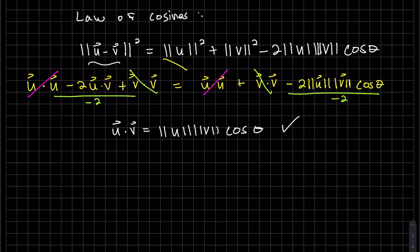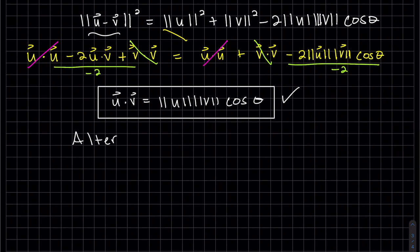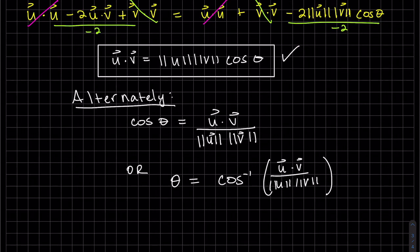And we did it. That was our alternate dot product above. And alternately, this is used for a lot. You can solve for cosine of theta. It's the ratio of the dot product divided by the magnitudes. Let's do an example.